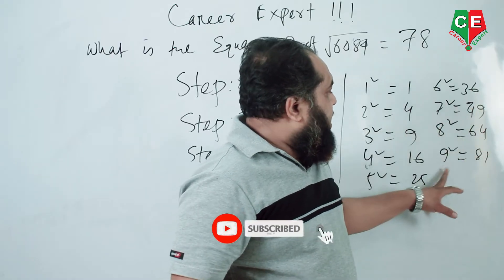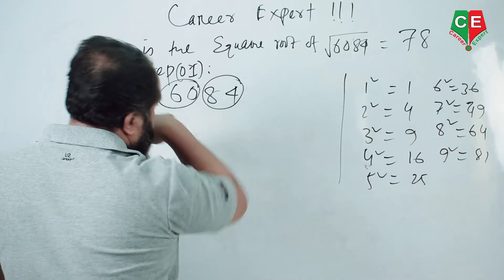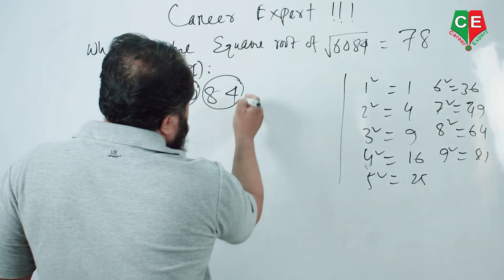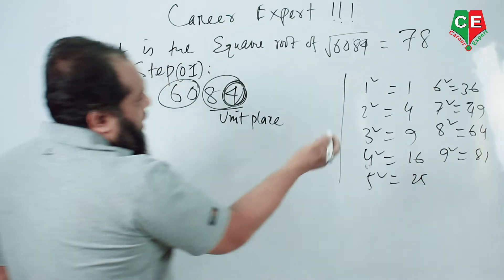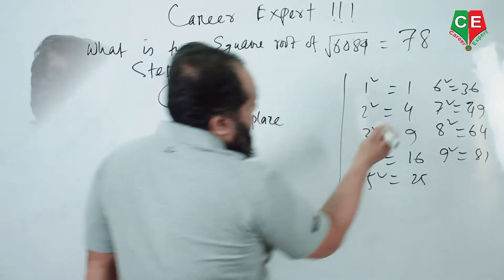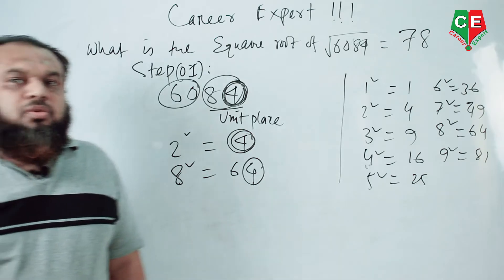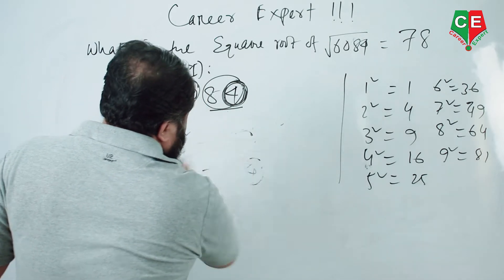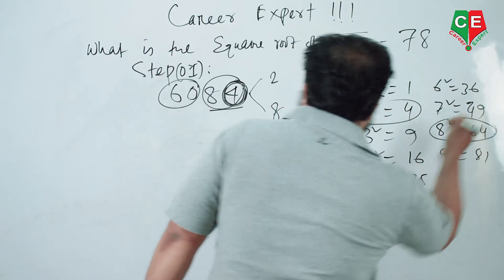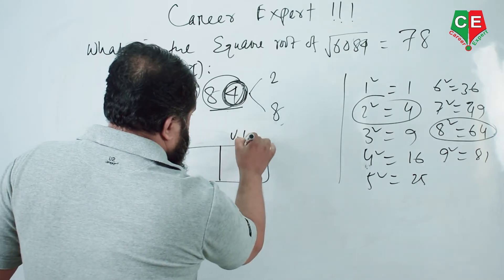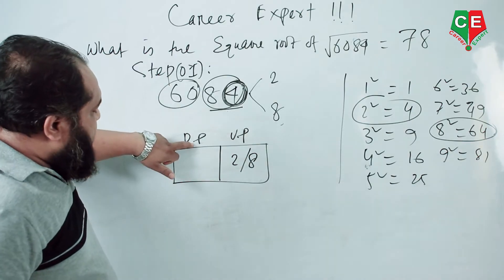For the first example, make two pairs from 6084: that gives 60 and 84. Have a look — 84, the last digit, which is the unit place, is 4. Now look at where unit place 4 comes from: 2 squared equals 4, and 8 squared equals 64, so the unit place is also 4. So the unit place of our answer is either 2 or 8.